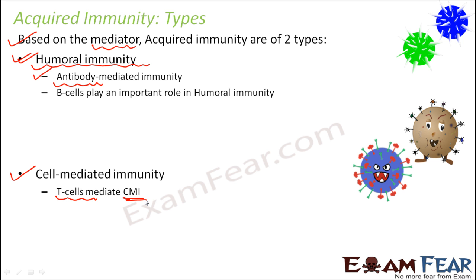T cells can stimulate the B cells to produce antibodies and also stimulate other neighboring T cells. So this type of immunity is called cell-mediated immunity. In this type of immunity, antibodies are not directly involved, because it is all about activating other T cells and activating other B cells. More B cells and T cells get produced, so antibodies come as the next step — leading to humoral immunity. Here, no antibodies directly; only T cells are involved.